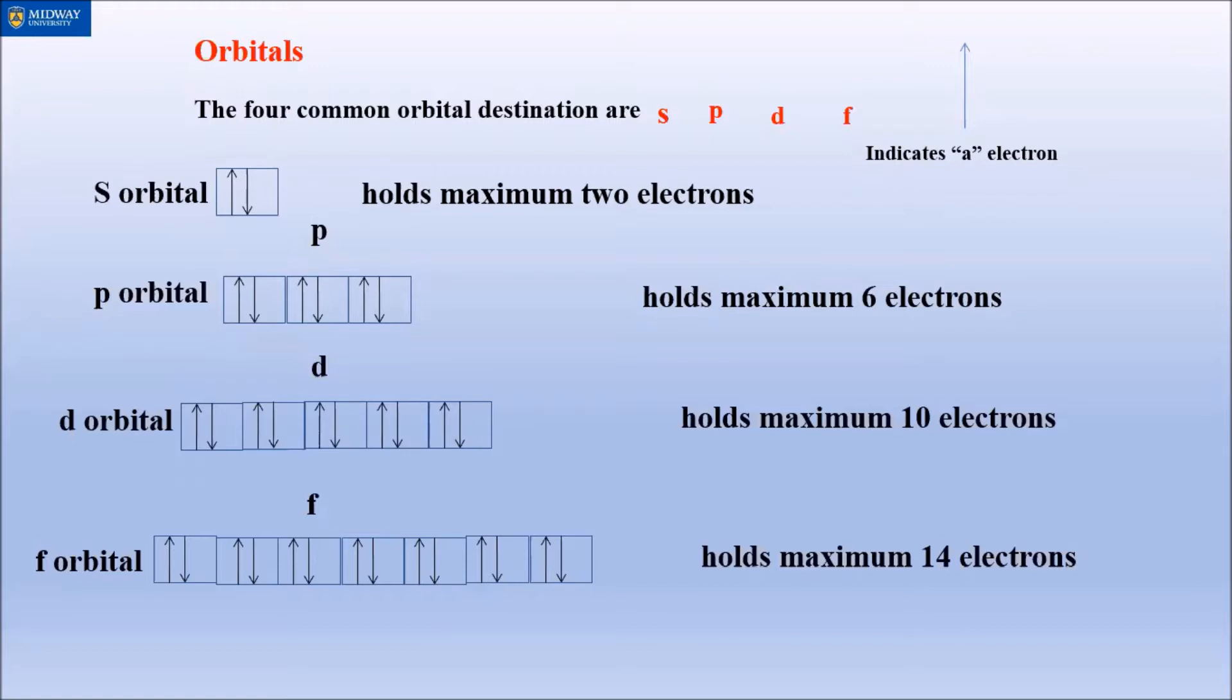We already know the four common orbitals are S, P, D, F, so there's no difference. Chemistry is so abstract that we have to use shapes and whatever we can to get the concept across. Now an electron is typically recognized as a dot.